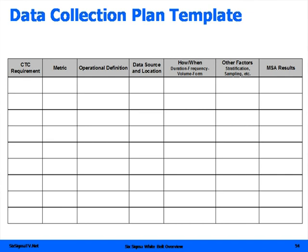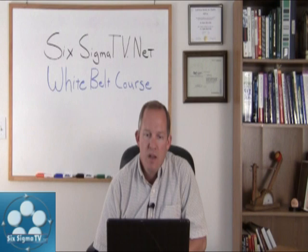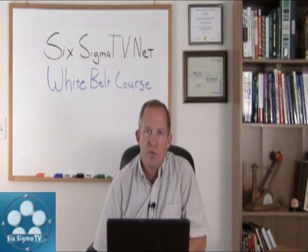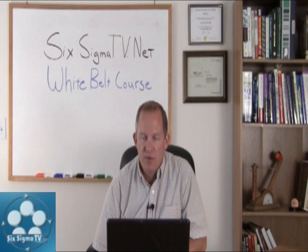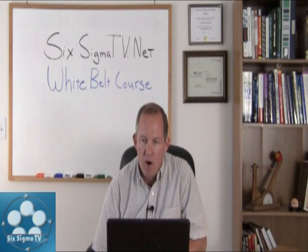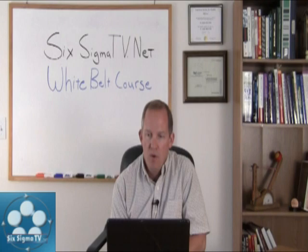Here's an example of the template. On the left you see the CTC — critical to customers — what's the voice of the customer. We understand the voice of the customer and prioritize those requirements into what's critical. Next we'll understand what are the metrics that help us predict that CTC, the operational definitions of those metrics, where's the source and location for that metric and the data we're going to collect, how often we're going to do it, volume, etc. Other factors: are we going to stratify that data, do we want to break it out, and then what were the results of the MSA.